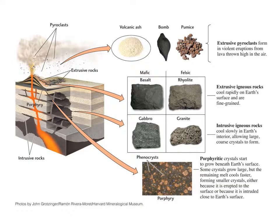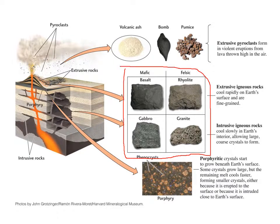Let's talk about how and where igneous rock forms. There are basically two main ways we classify igneous rock: we can classify it based on its mineral composition, and we can classify it by where and how fast it cools. Here are our four main types of igneous rocks, organized into two columns called mafic and felsic, which refer to mineral composition.